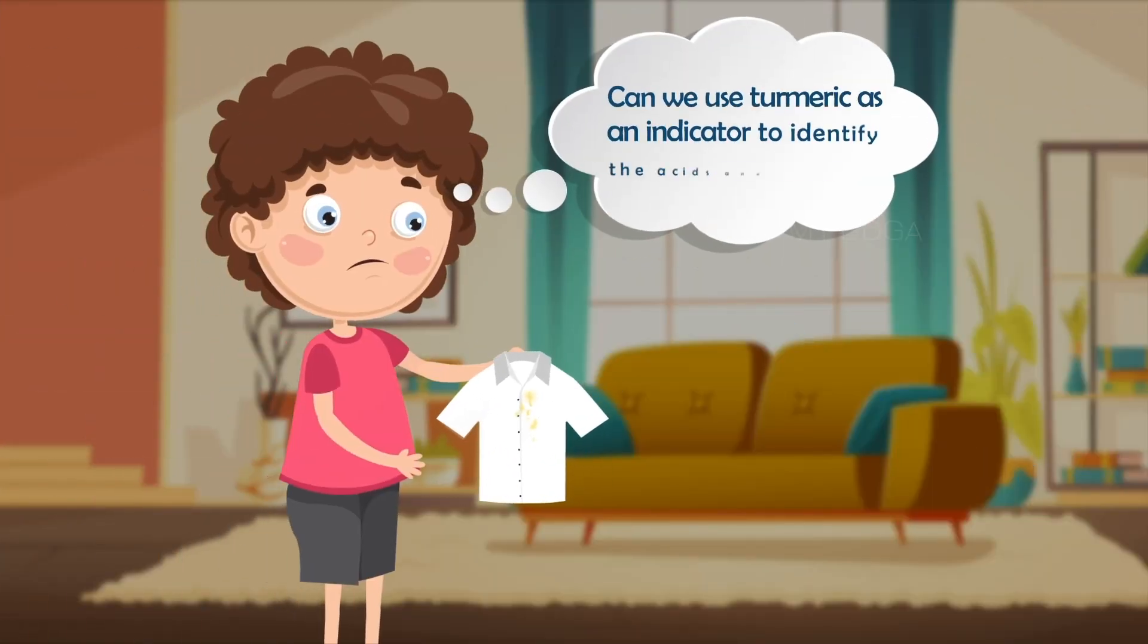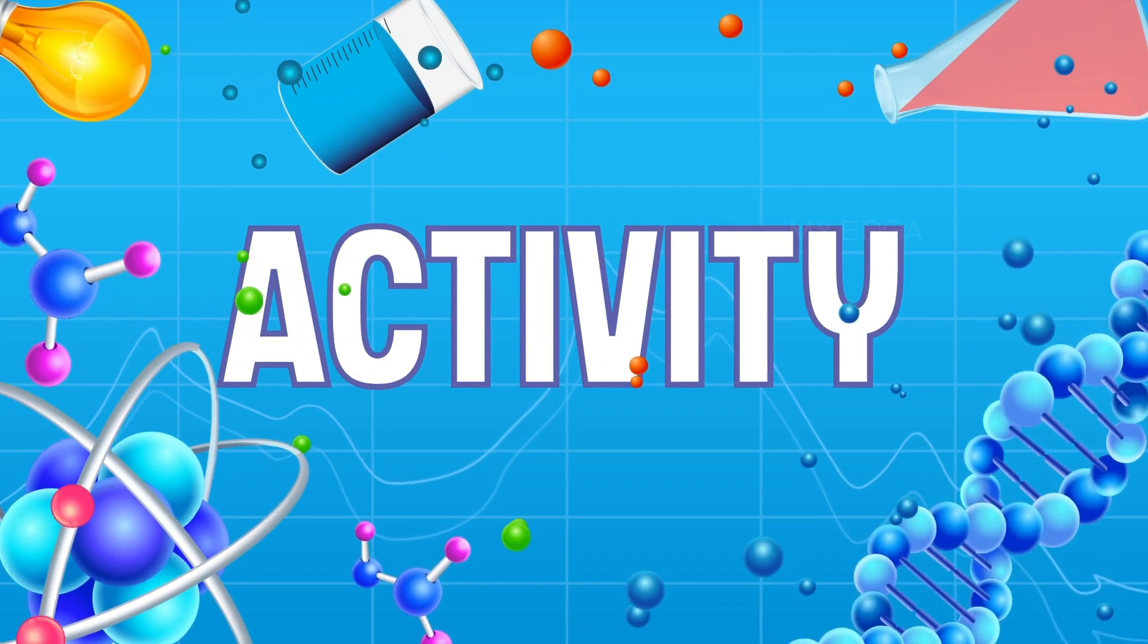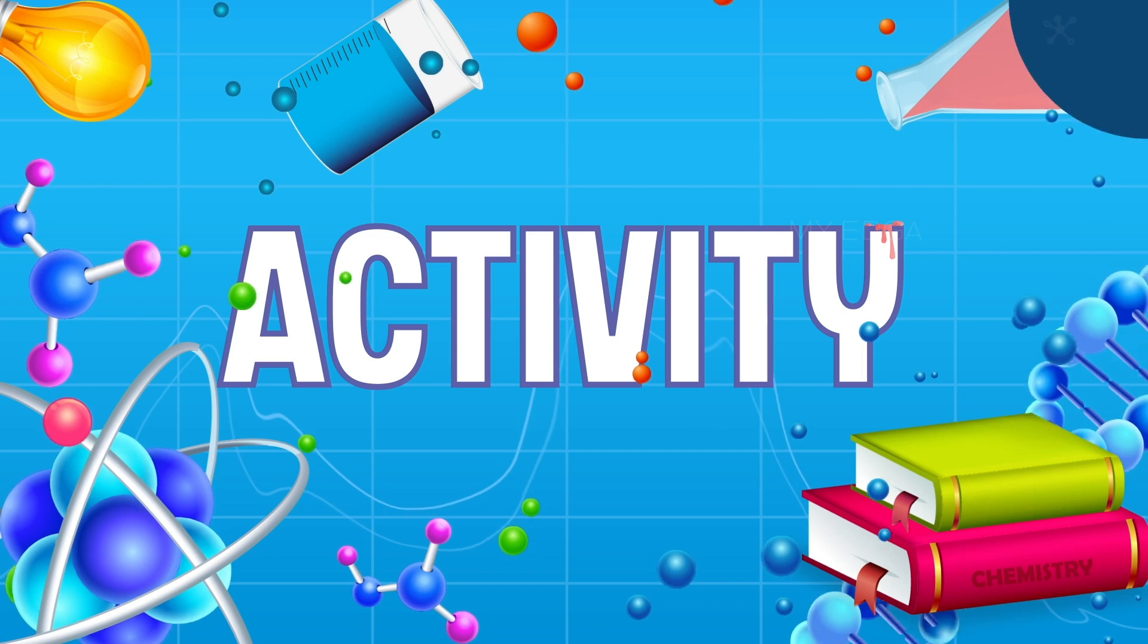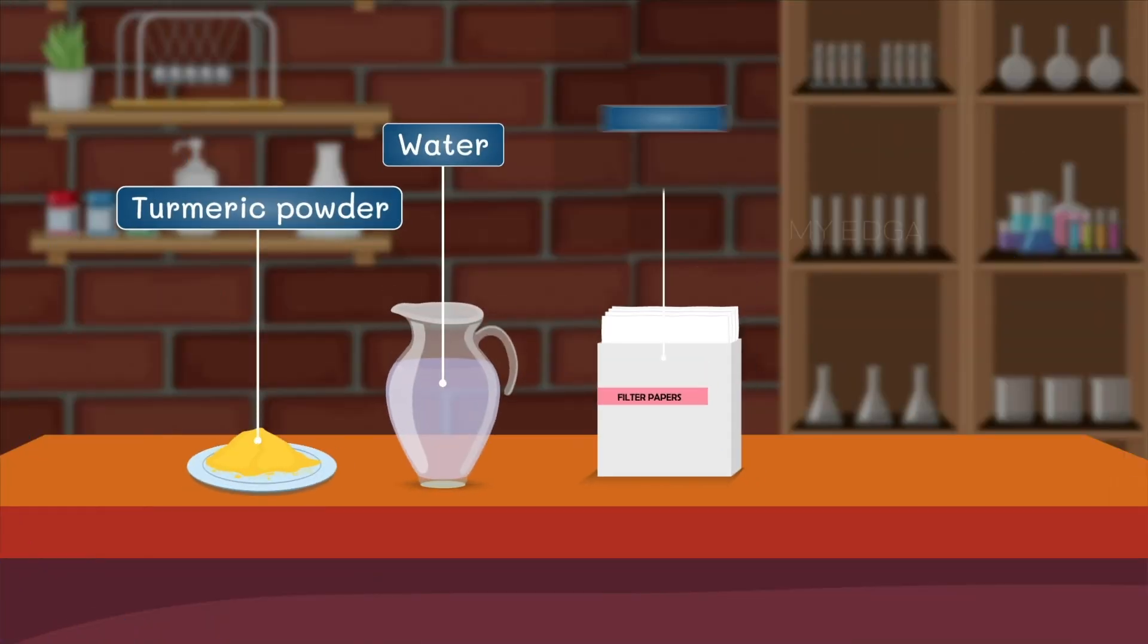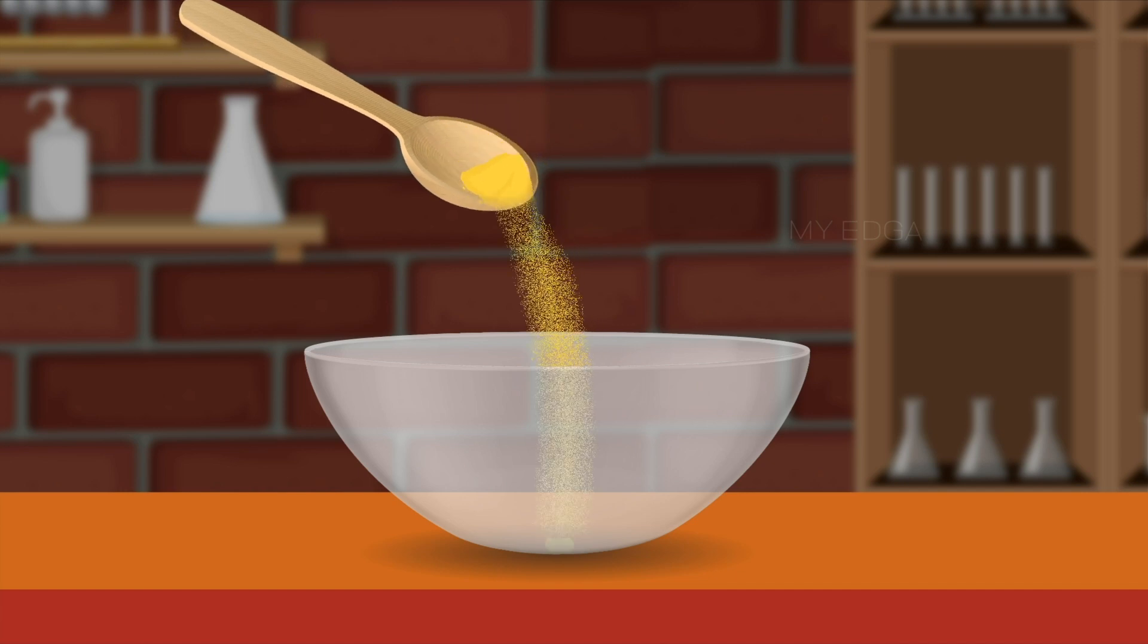So can we use turmeric as an indicator to identify the acids and bases? Come, let us discuss the indicator action of turmeric through an activity. We need turmeric powder, water, filter paper, and soap solution. Take a tablespoon of turmeric powder, add a little water and make a paste.